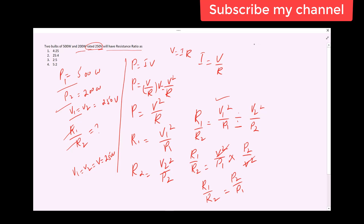Since V1 equals V2, the voltages cancel out. So R1 over R2 becomes P2 over P1, which is 200 over 500. That simplifies to 2 over 5.